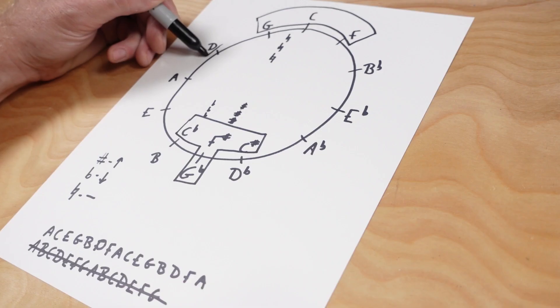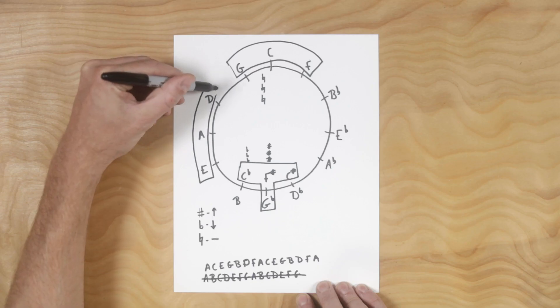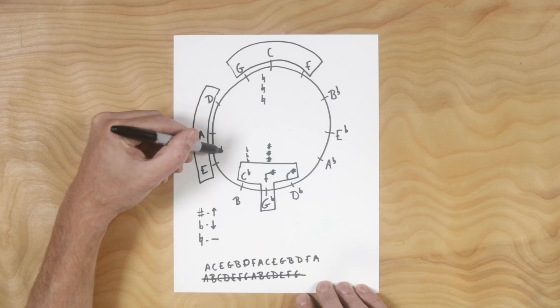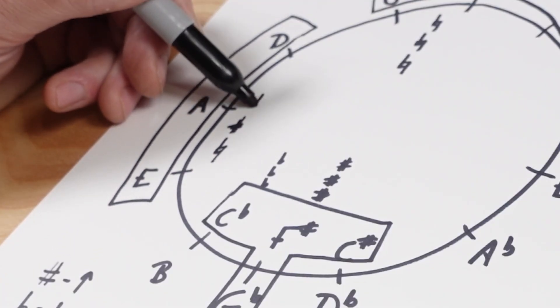The next quadrant is this, the D E A. Now in this quadrant, the bottom note is natural, the middle note is sharp, and the upper note is natural.